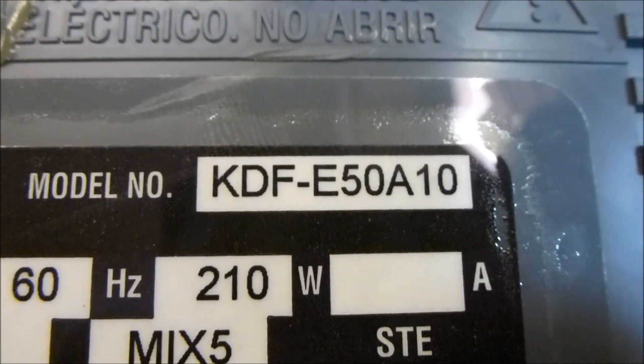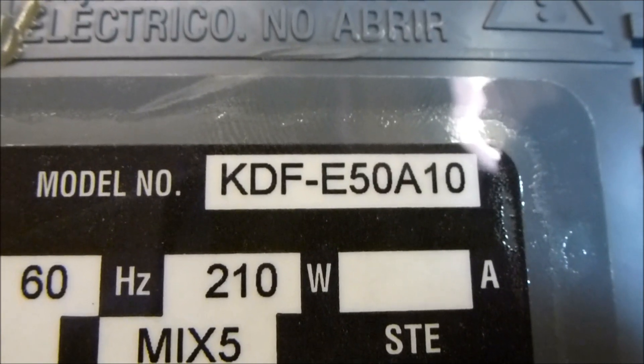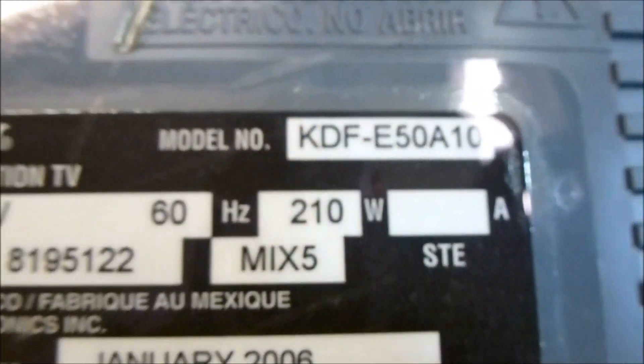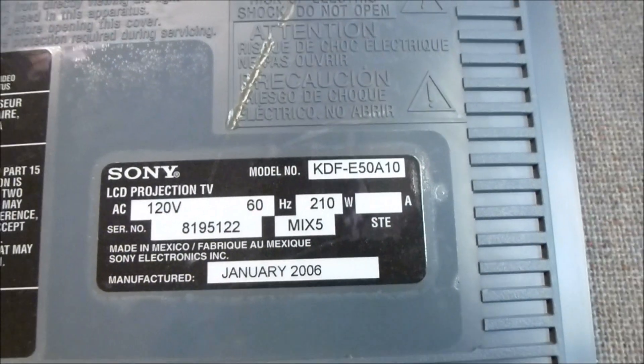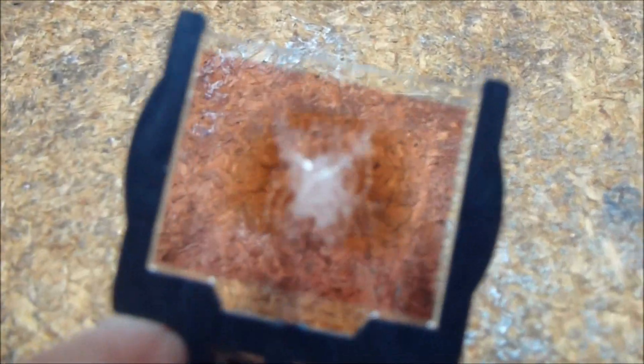It came in and it had a bunch of green blobs in the picture. And I've done the other videos on repairing the LCD panels on these TVs. I'll show you what was going on with this one. It's actually the polarizer that was having the problem on this particular TV.